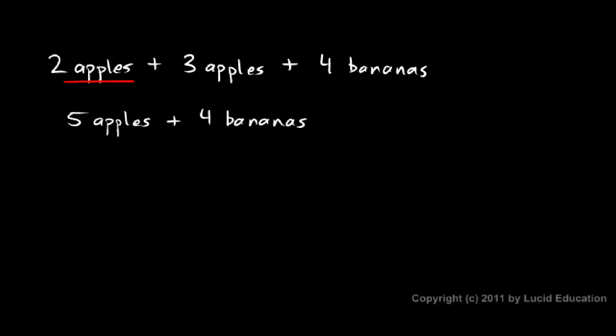The point here is that the two apples and the three apples could be combined because they're both apples, but I can't combine the bananas with that because those are different things. So the like terms end up getting combined and the unlike terms don't.